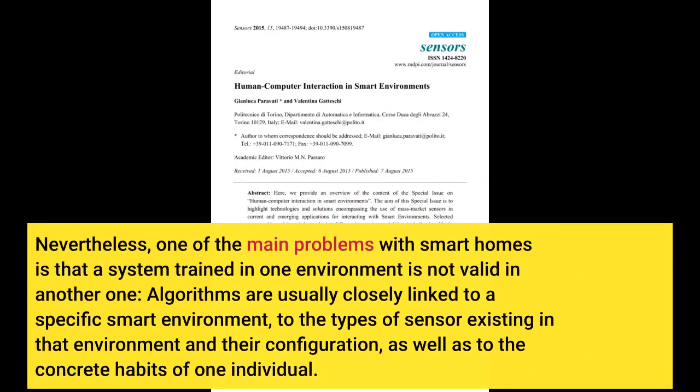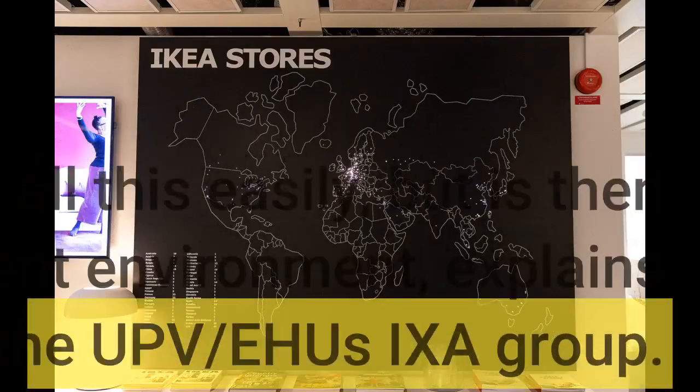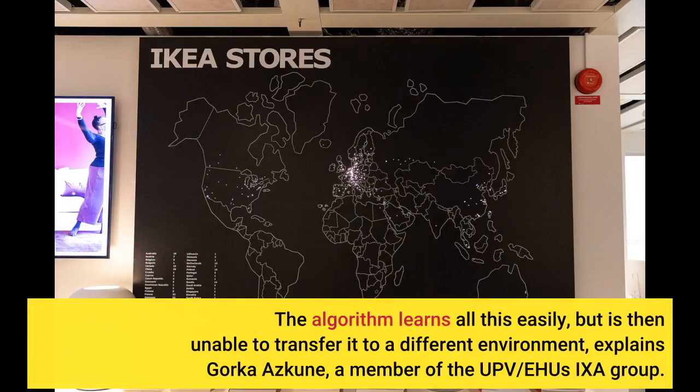Nevertheless, one of the main problems with smart homes is that a system trained in one environment is not valid in another one. Algorithms are usually closely linked to a specific smart environment, to the types of sensors existing in that environment and their configuration. The algorithm learns all this easily, but is then unable to transfer it to a different environment.